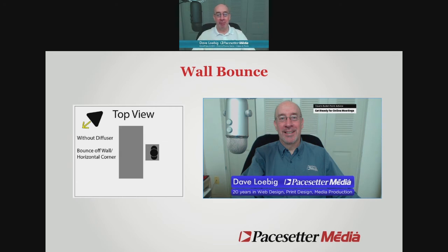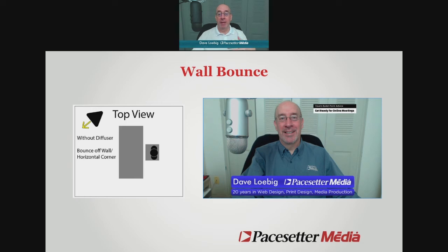Here's the lighting setup: as simple as it is, it's one light bouncing off the wall in front of me. Notice it's a big, broad light source — because the light source is effectively the entire size of the wall. It's not a small source like a bare bulb. Since it's bouncing, it's a very big light source hitting me, which generally makes for good lighting.